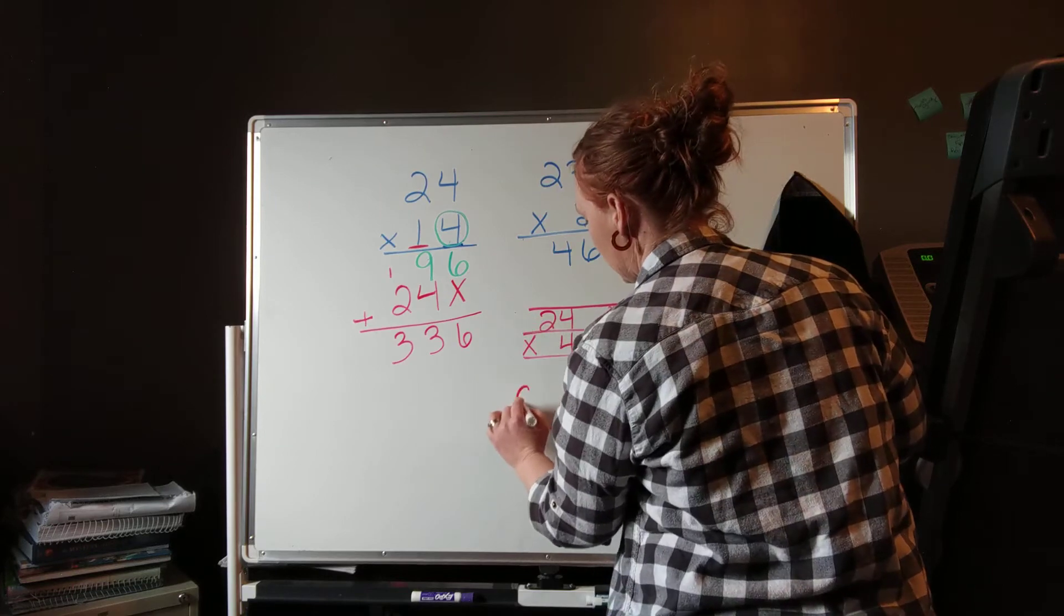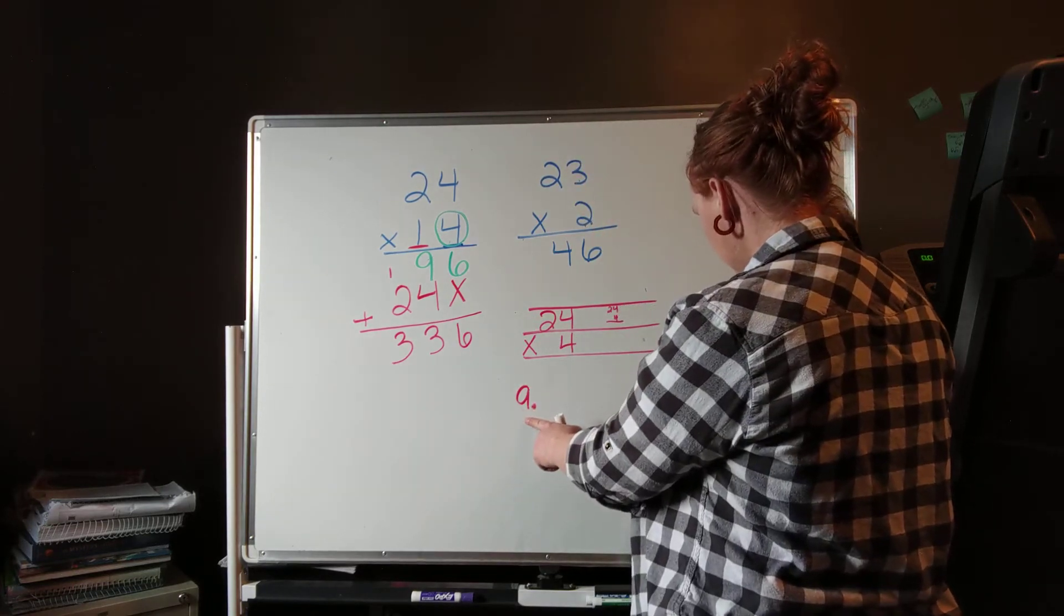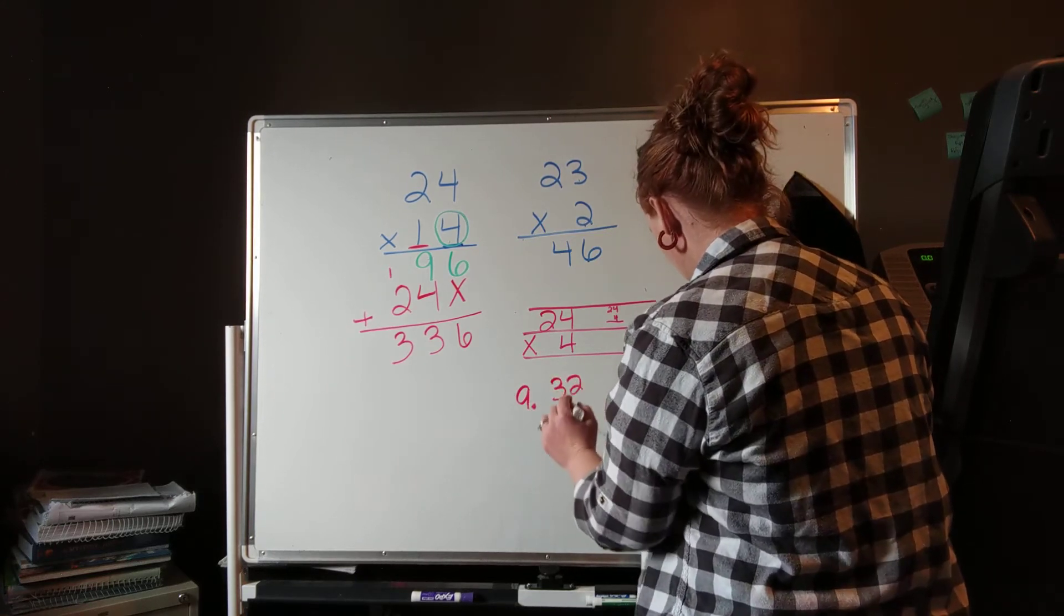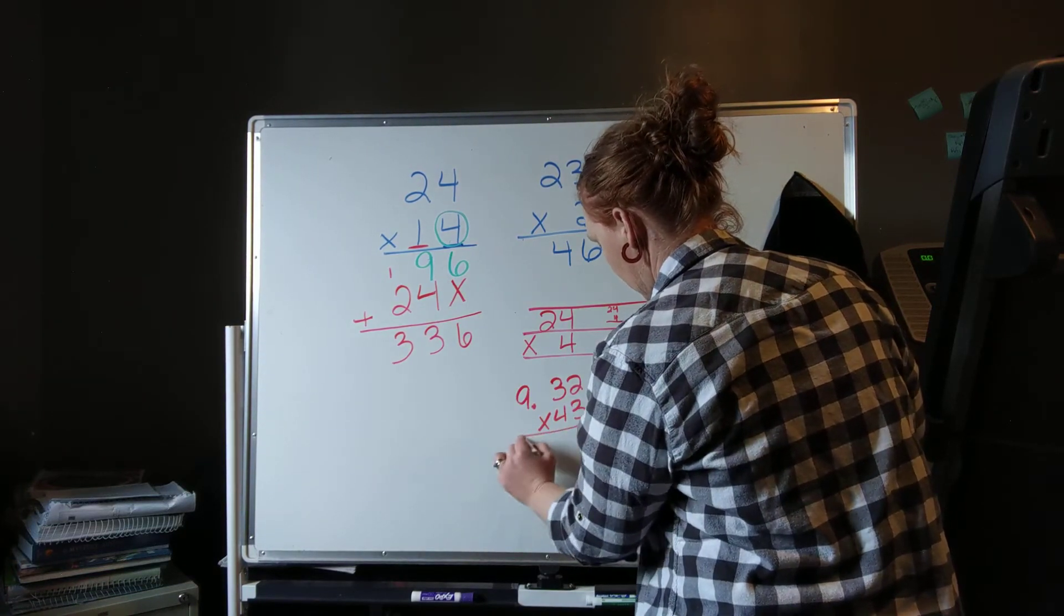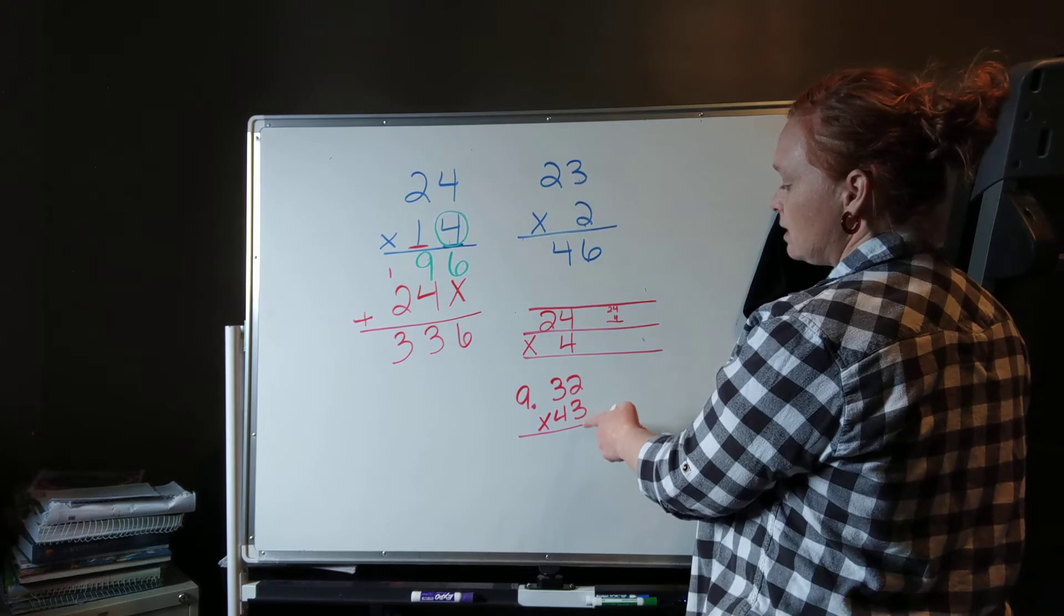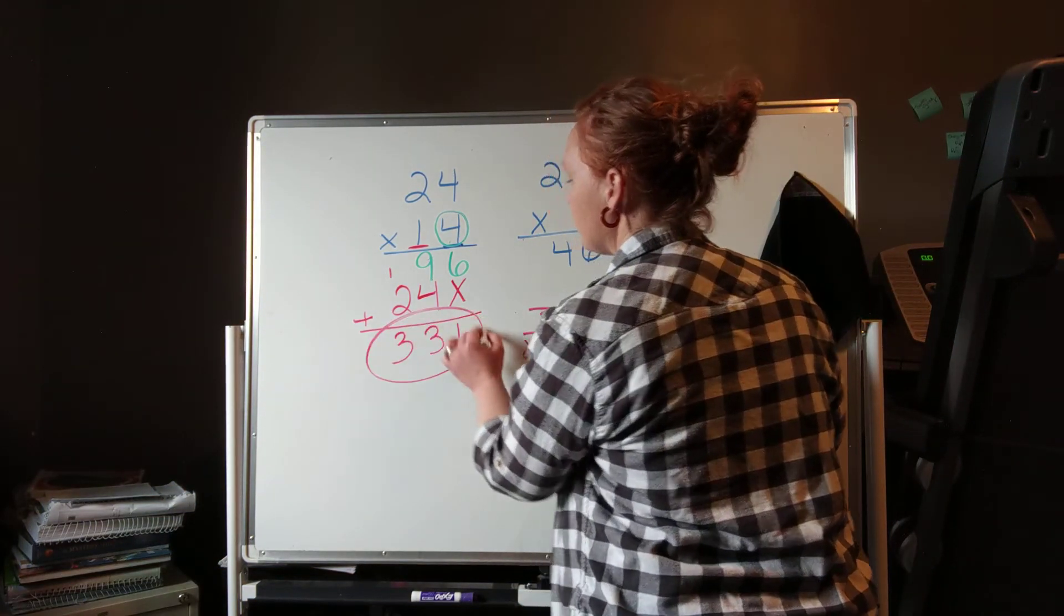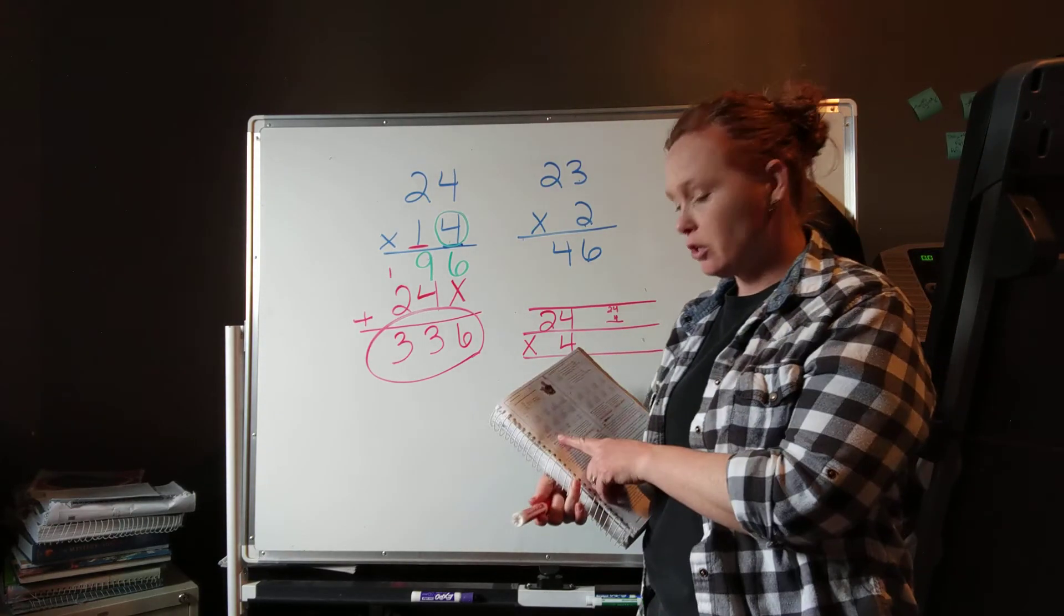So if we were doing number 9, we want to make sure that we write number 9, and then it's 32 times 43. We want to write it nice and neat, and then when we get down here, what do we always need to do with our answer? Go ahead and circle it for me, and then you can come back and write it into your worksheet page.